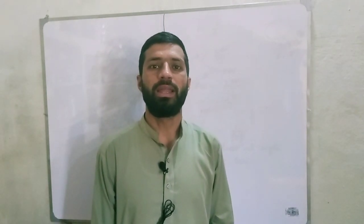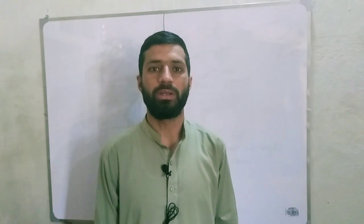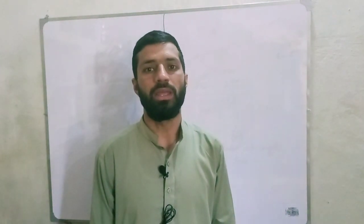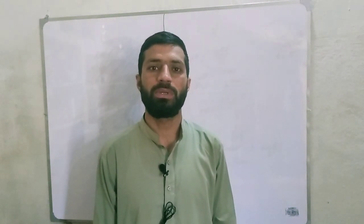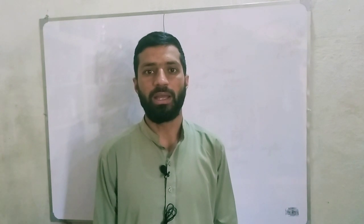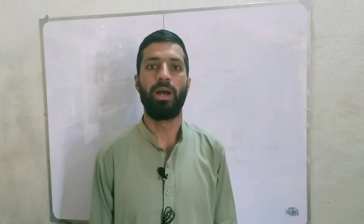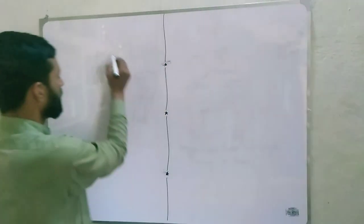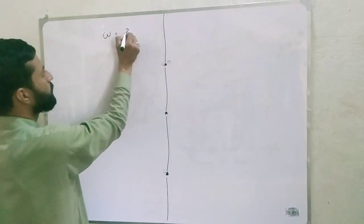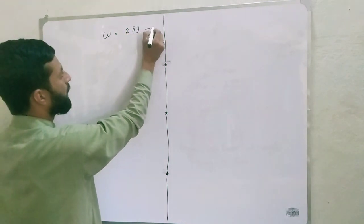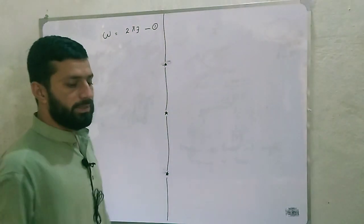Welcome. Today our video is about linear frequency and angular frequency — how they are related. The relationship between omega and f is omega is equal to 2 pi f. We will prove how omega is equal to 2 pi f. This is the goal of our today's video, and it can be proved by two ways.